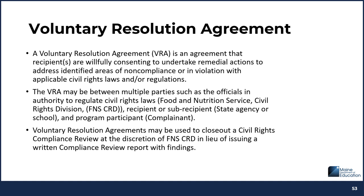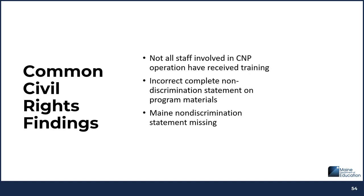Voluntary resolution agreements may be used to close out a civil rights compliance review at the discretion of FNS Civil Rights Division in lieu of issuing a written compliance review report with findings. Here are some common civil rights findings in Maine: not all staff involved in child nutrition program operations have received civil rights training, there are incorrect or incomplete nondiscrimination statements on program materials, and the Maine nondiscrimination statement is missing.